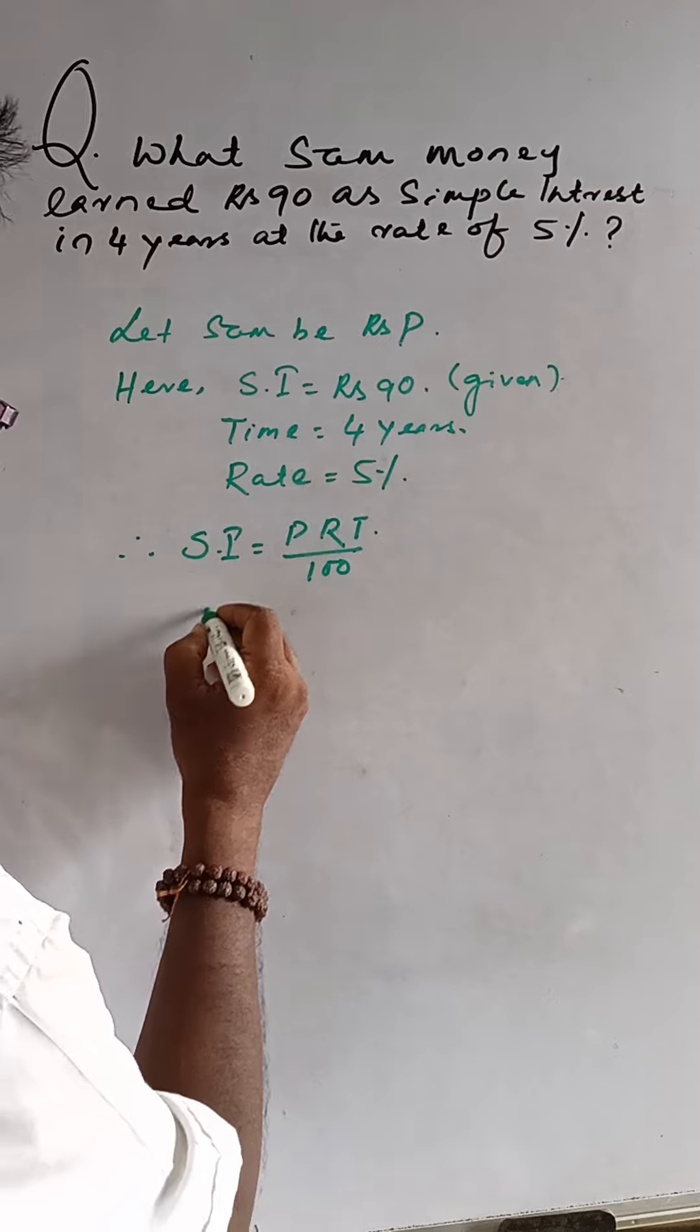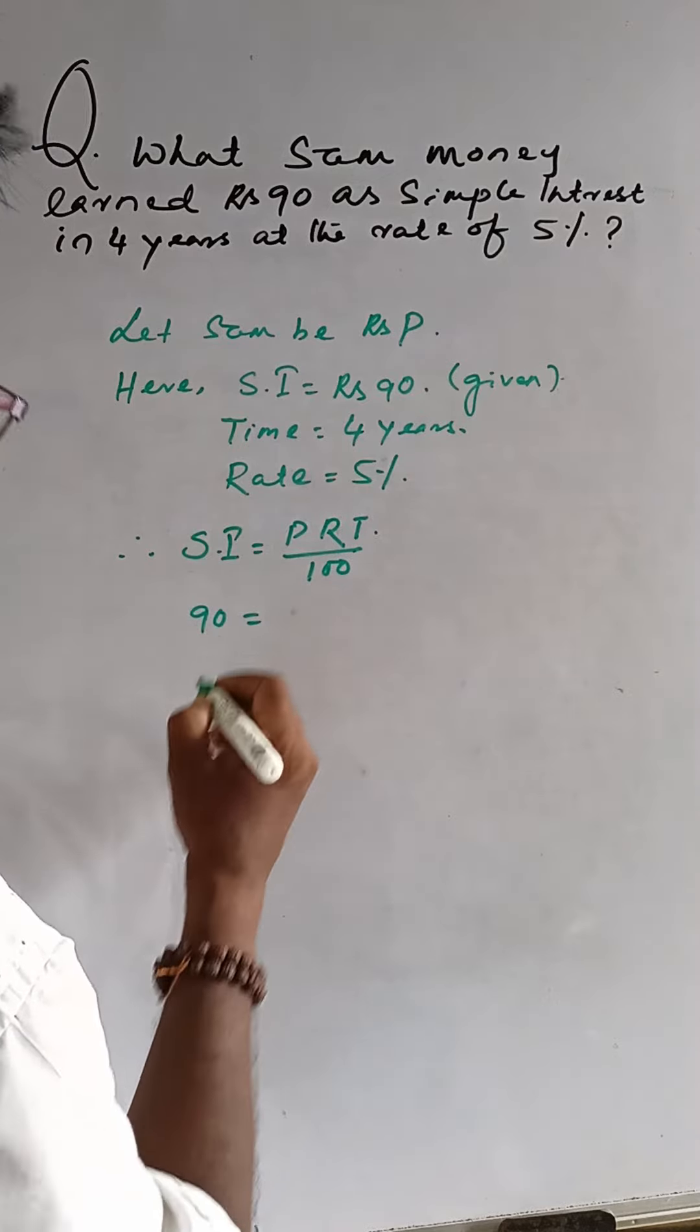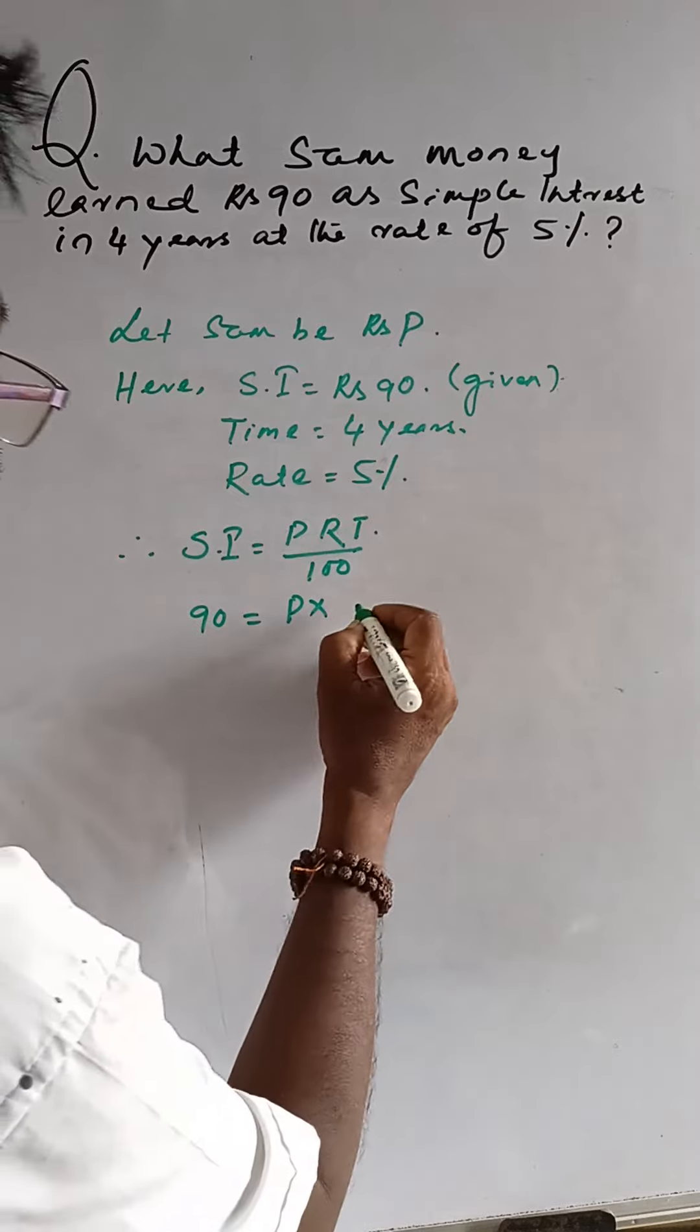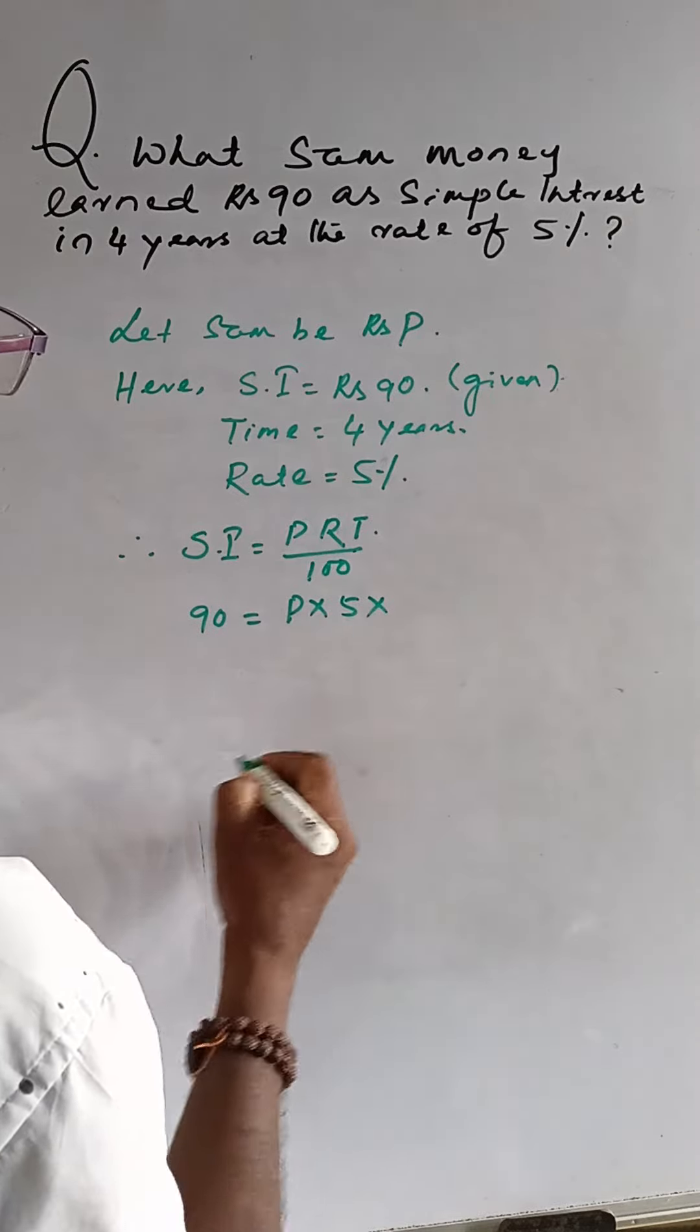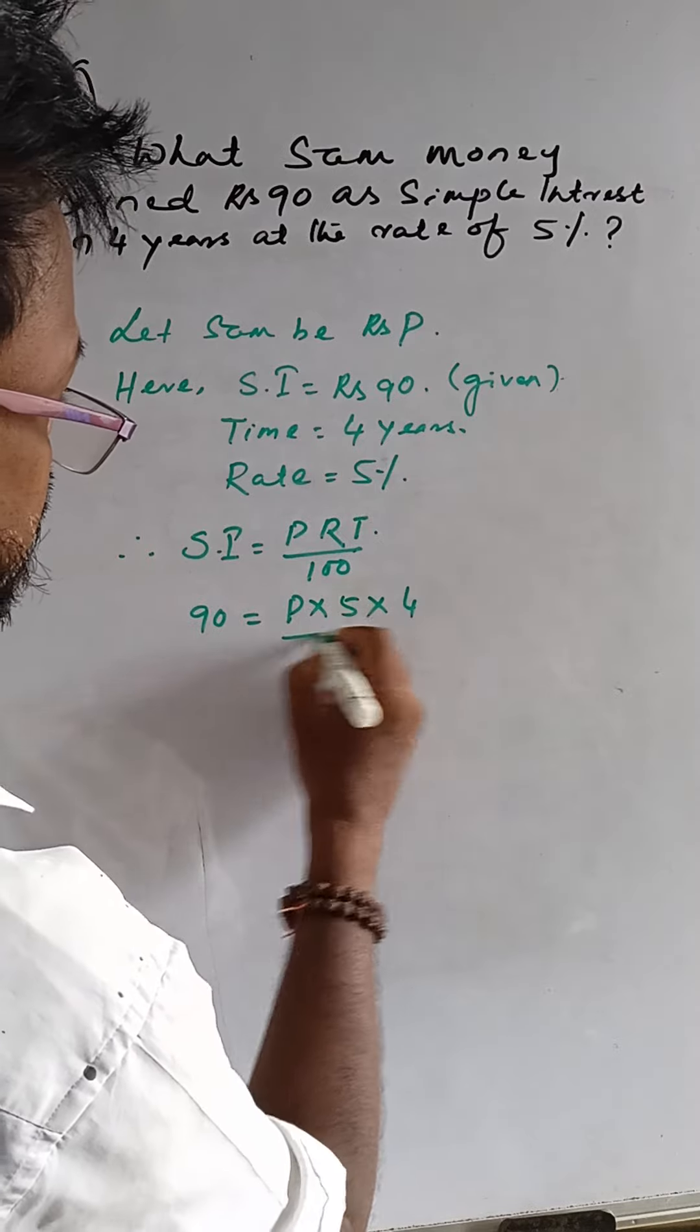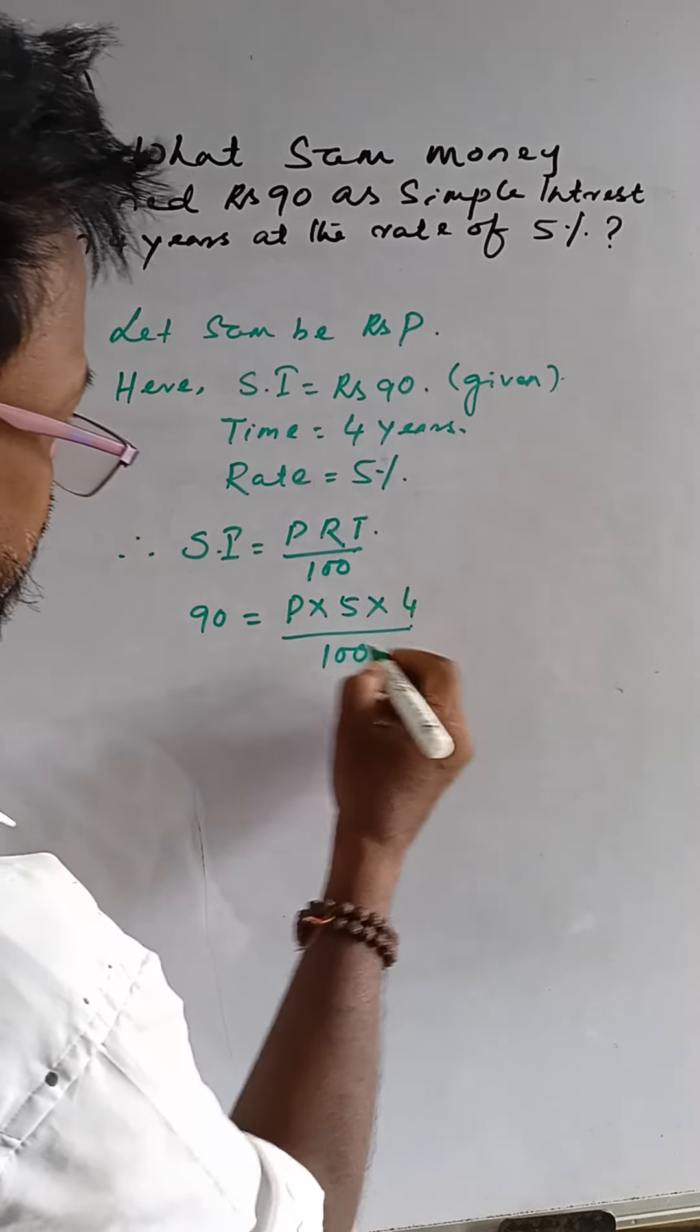So simple interest, 90, is equal to P into 5 into time, that is 4 years, divided by 100.